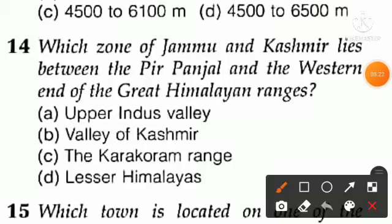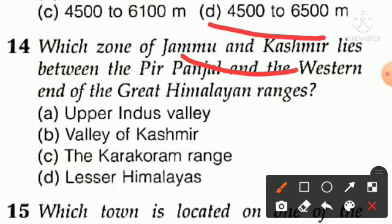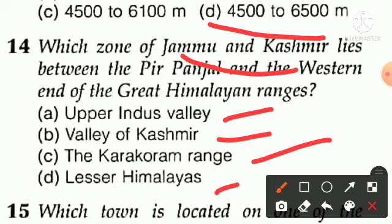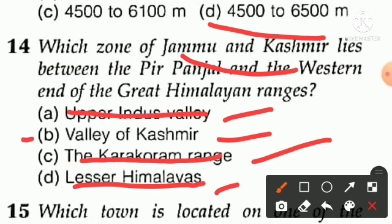Question number fourteen: which zone of Jammu and Kashmir lies between the Peer Panjal and the western end of the Greater Himalayan ranges? Options are: A — Upper Indus Valley, B — Kashmir Valley, C — Karakoram Range, D — Lesser Himalayas. Option D is not right, option C is not right, option A is not right. This is an important question — what lies between Greater Himalaya and Peer Panjal? The Valley of Kashmir. Option B is the right answer.